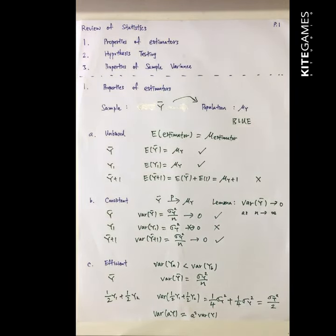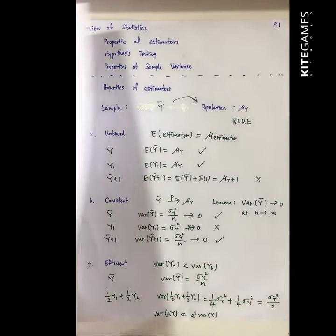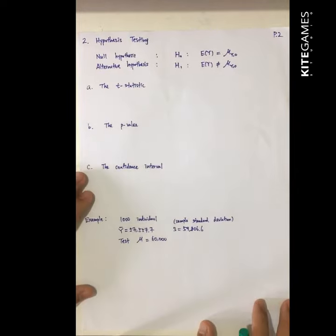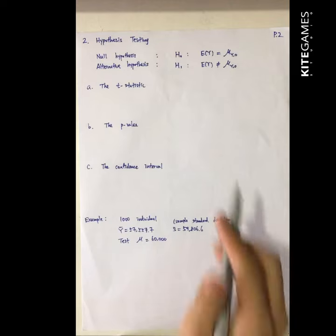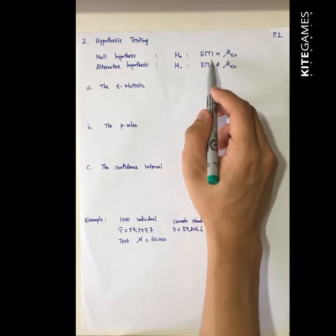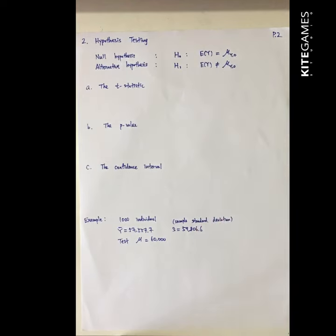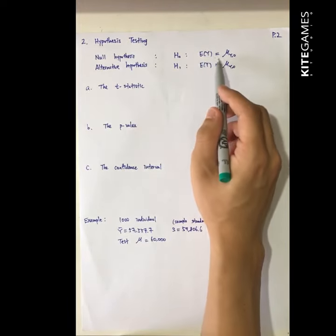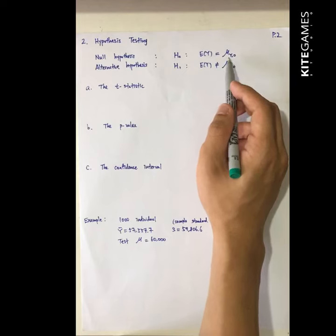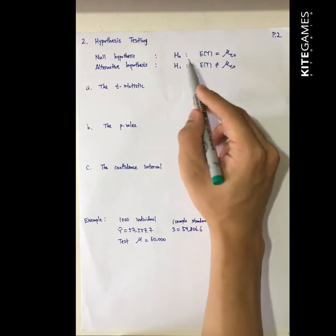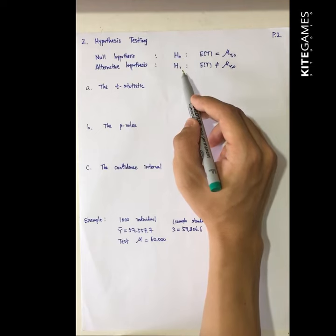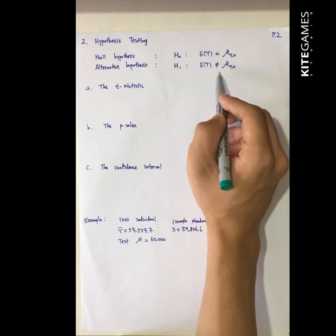Next, we are going to talk about hypothesis testing. Hypothesis testing means we draw a sample and check whether the sample statistic is equal to some certain value. For example, we draw 1,000 people and want to see whether the average wage equals 10,000 Hong Kong dollars per month. We set up the null hypothesis to see whether this is true, and then we need an alternative hypothesis stating that the expected value is not equal to what we hypothesize.